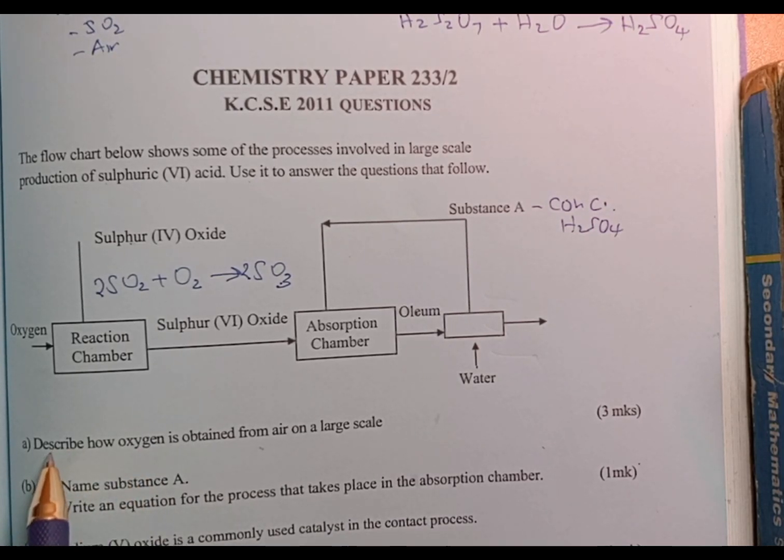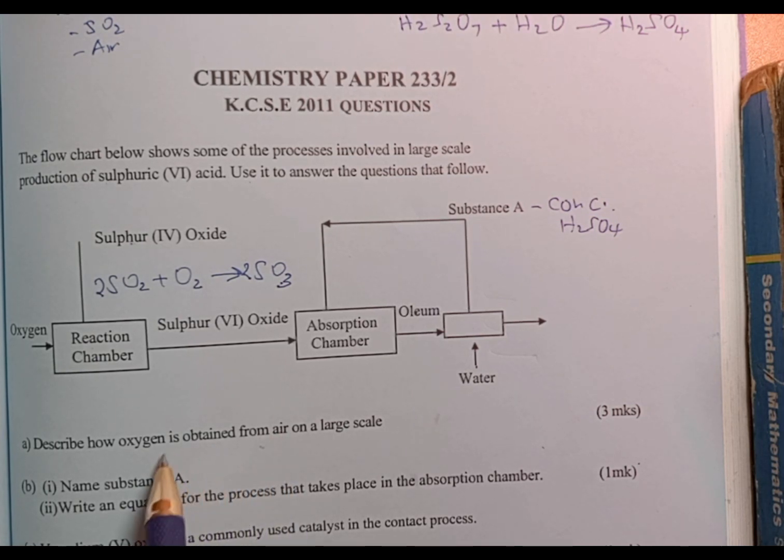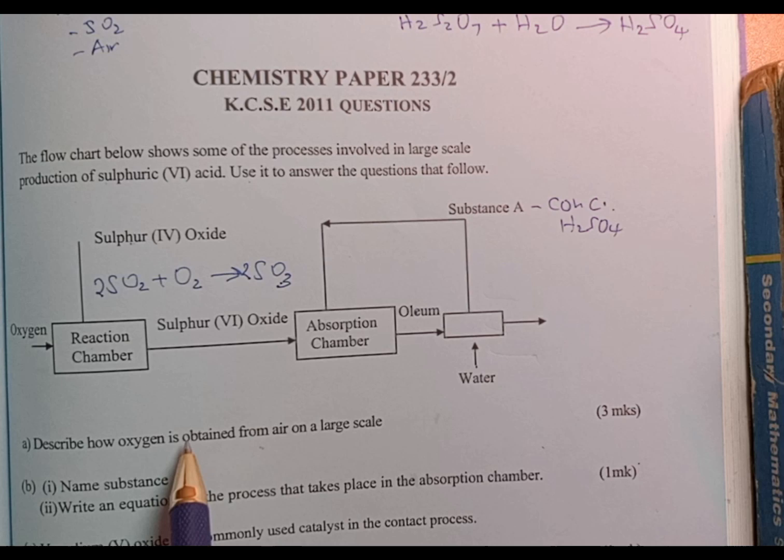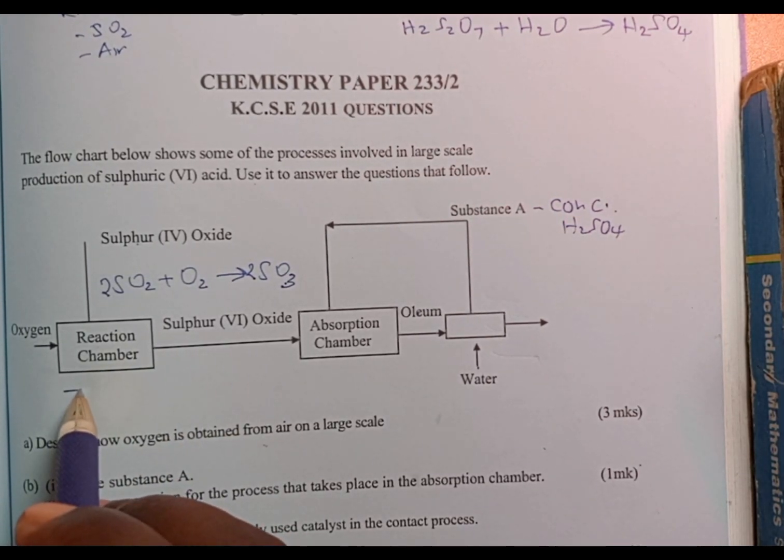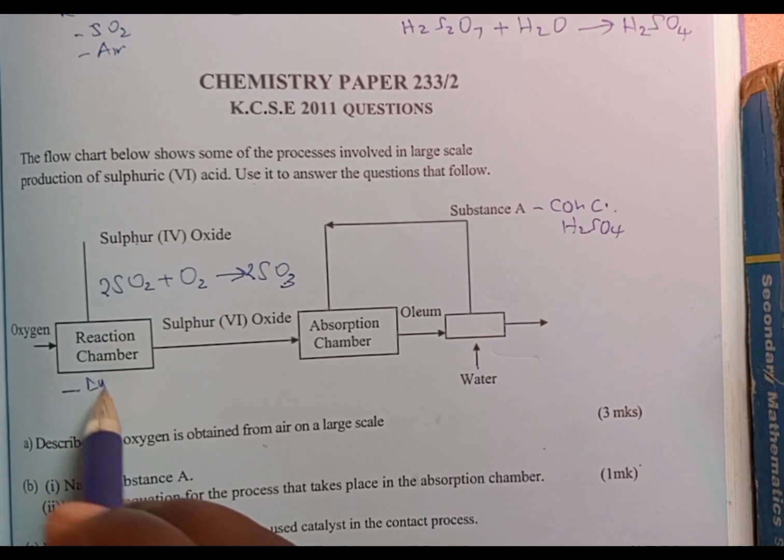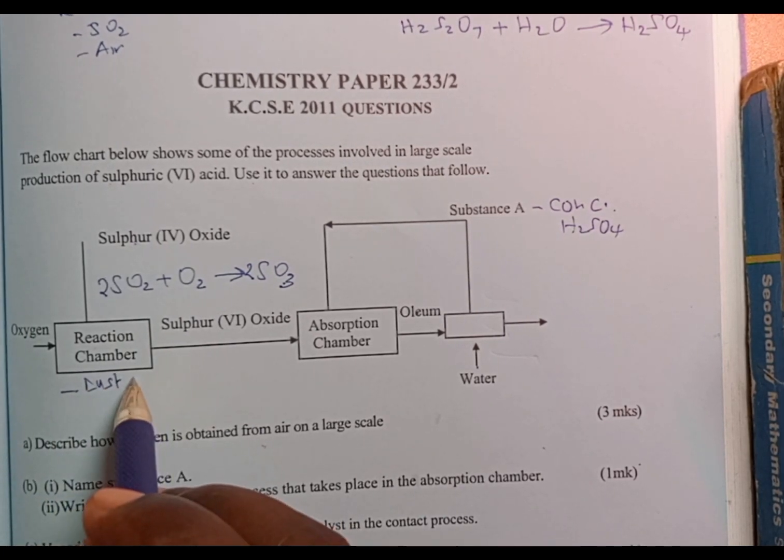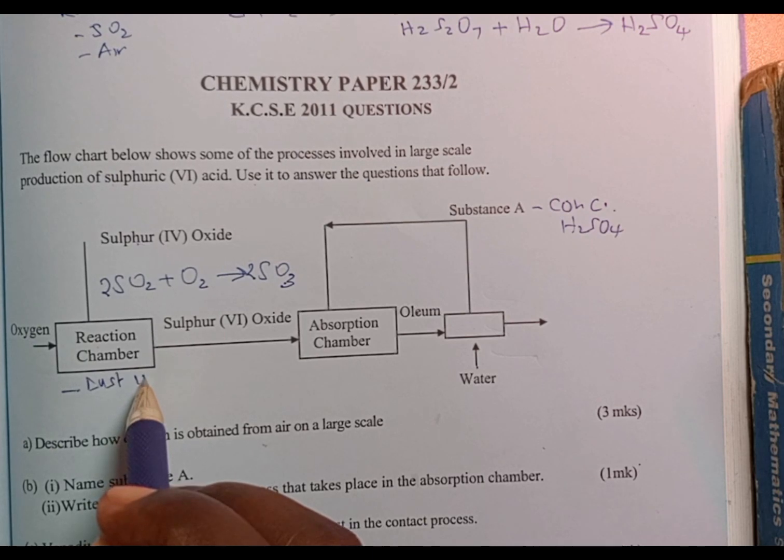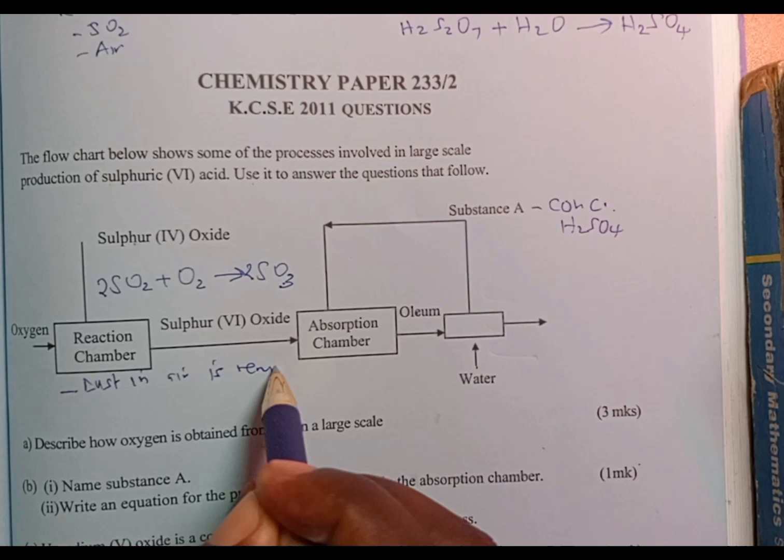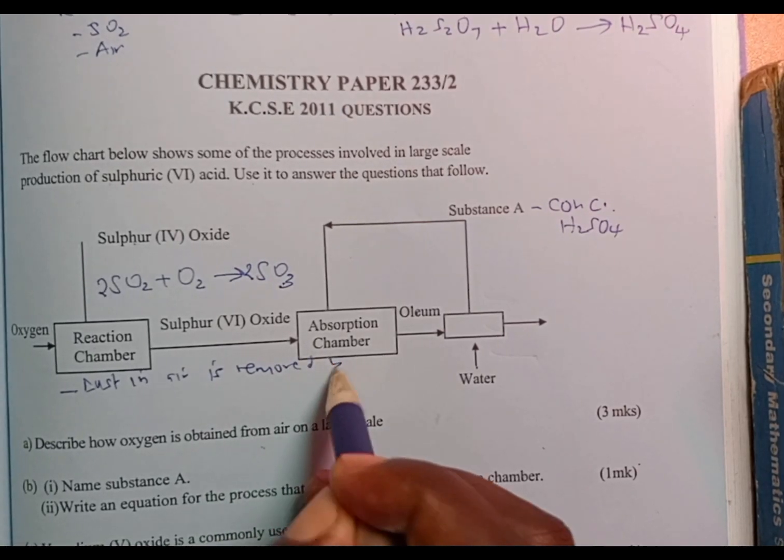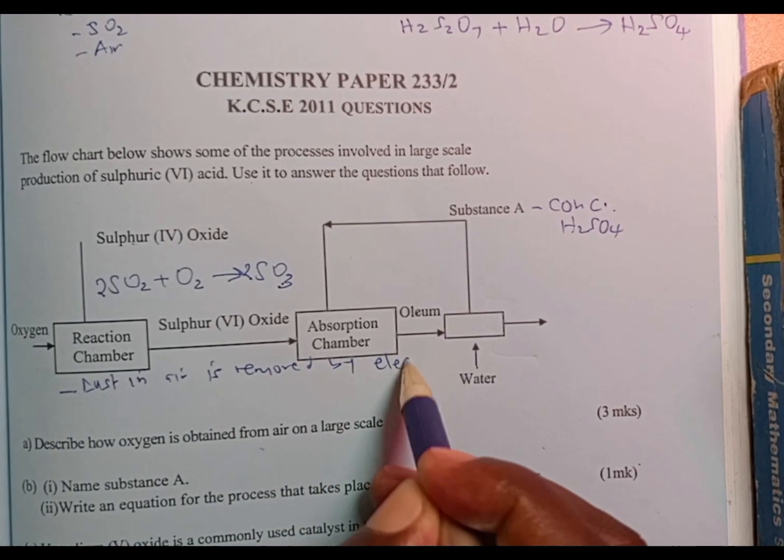First part of this question: describe how oxygen is obtained from air on large scale. Remember, oxygen is obtained from air by fractional distillation.